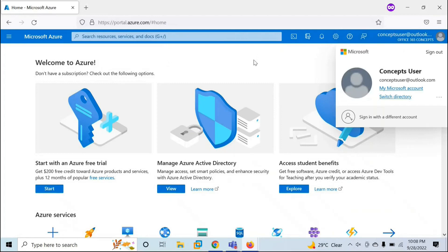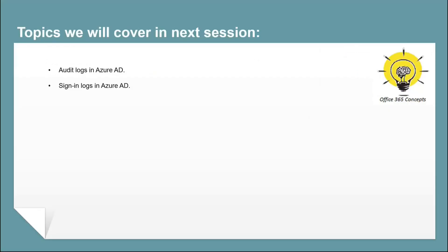So this is how B2B collaboration works — how you invite external users to your organization and how they can access your organization's resources. In the next video, we will understand how to analyze audit logs and sign-in logs in Azure Active Directory. If you learned something new from this video, please write in the comments and subscribe to the channel. Thank you guys, thank you for your time. Take care.